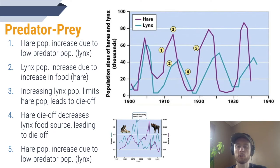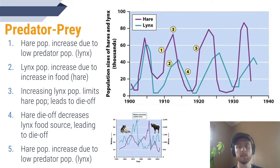So if we were to try to establish a carrying capacity for each species based on the graph, we might draw the line for the hare around 60,000 and the carrying capacity for lynx at around 30,000, since these seem to be the values that each population fluctuates above and below.